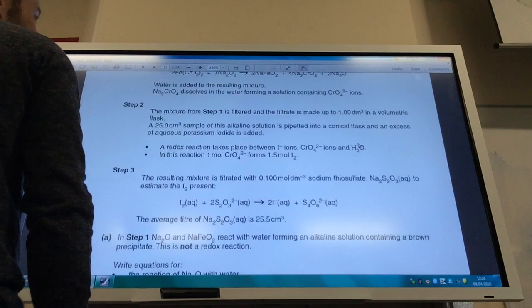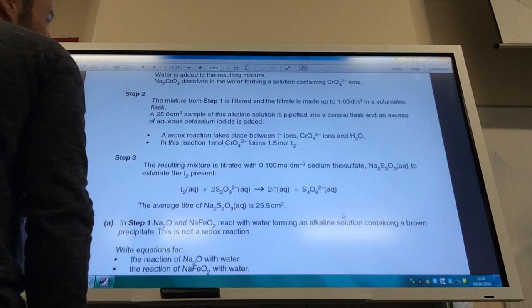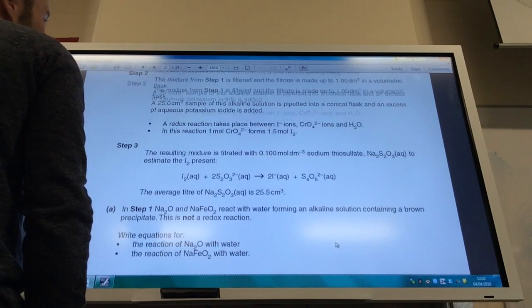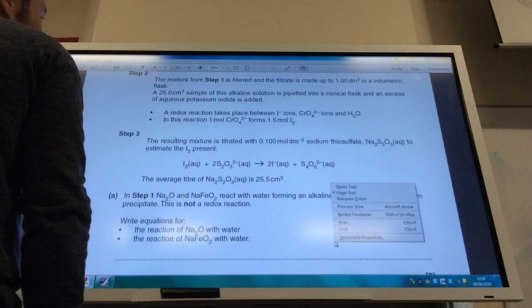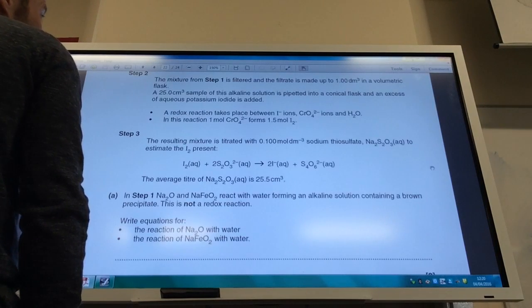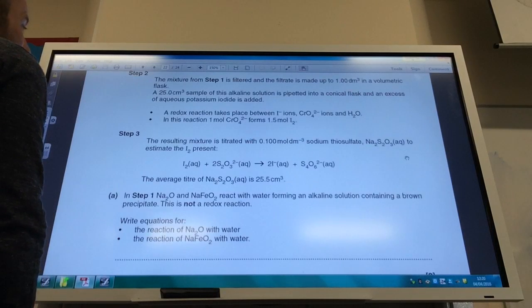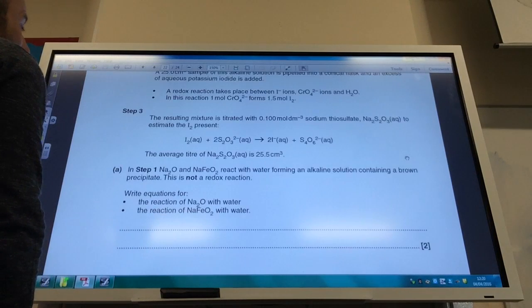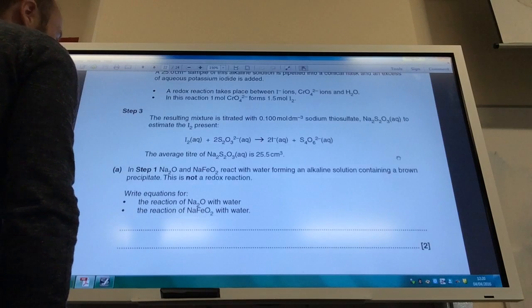Then we are going to filter it, make the filtrate up to 1 decimetre cubed, take 25 centimetres cubed of that and do a redox reaction with iodide and then we're going to react the iodine with sodium thiosulfate under the standard iodine thiosulfate titration.